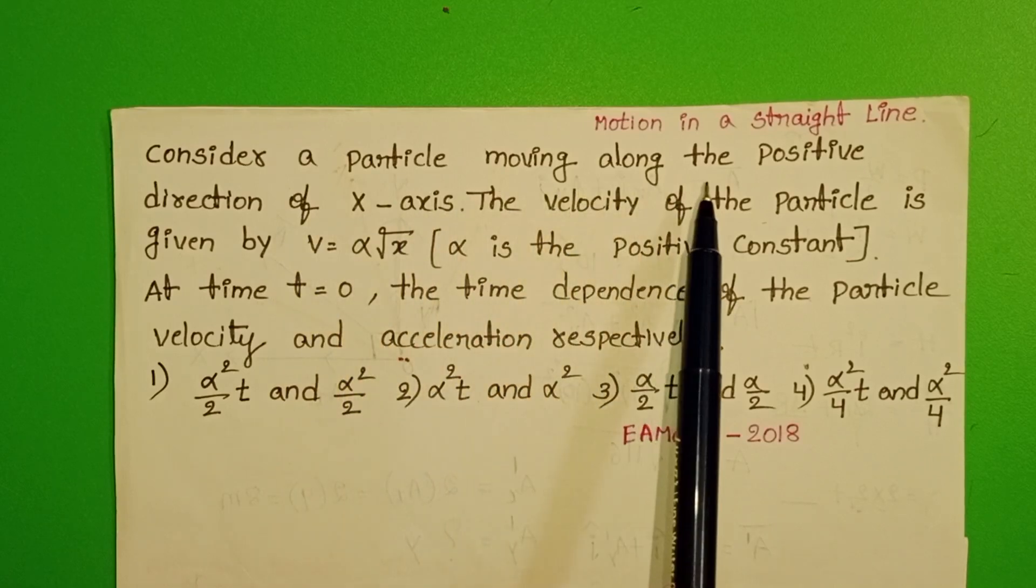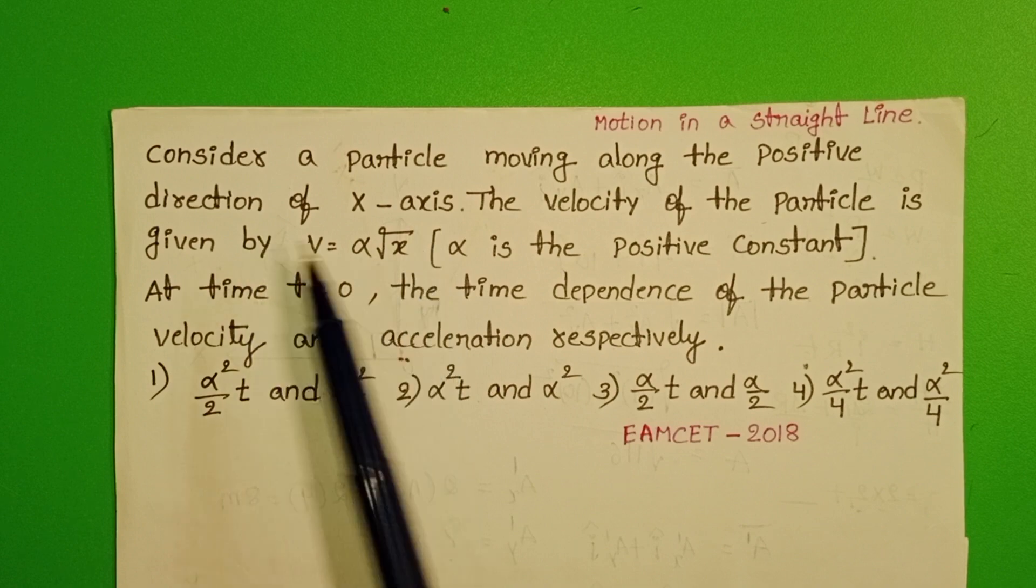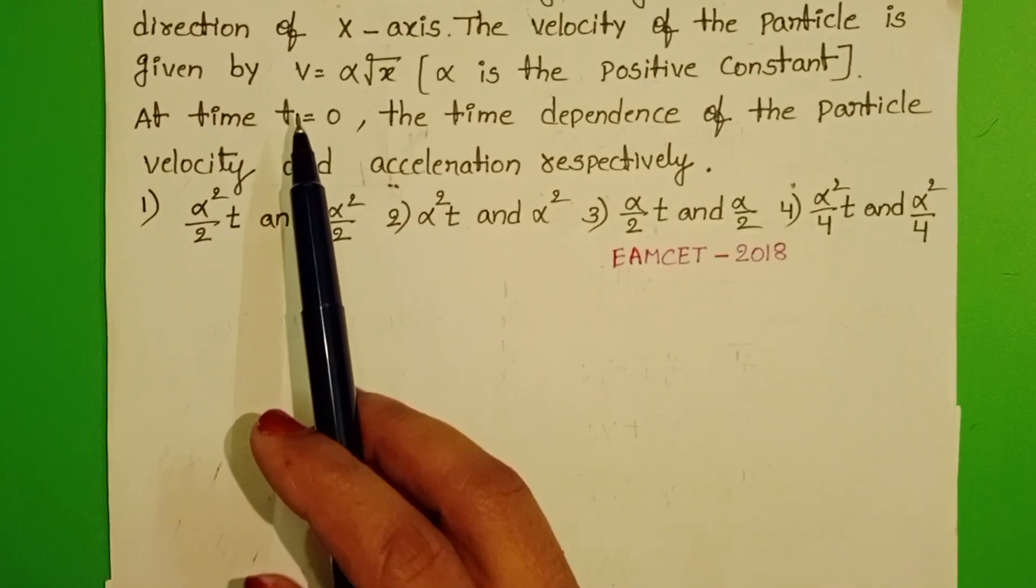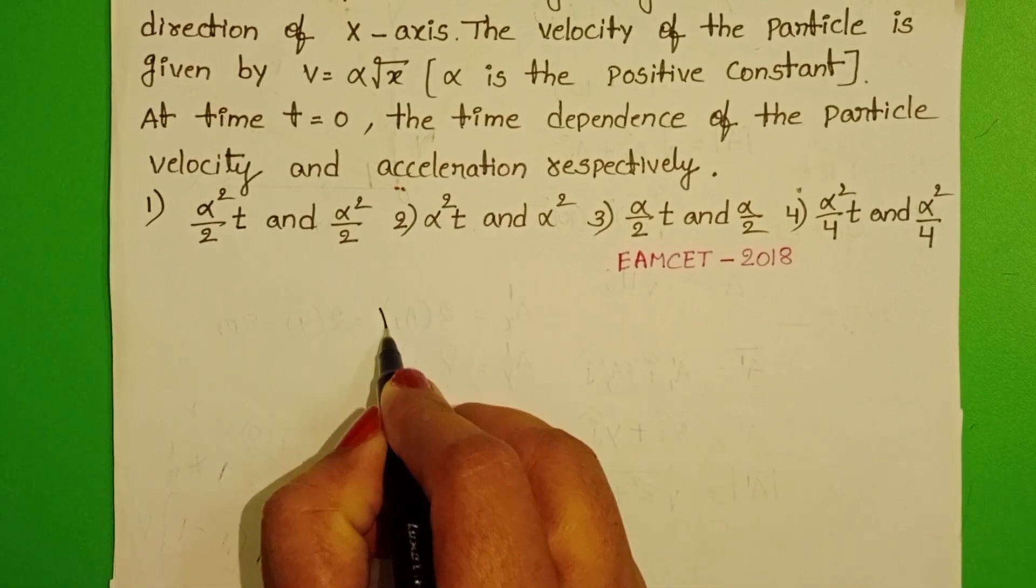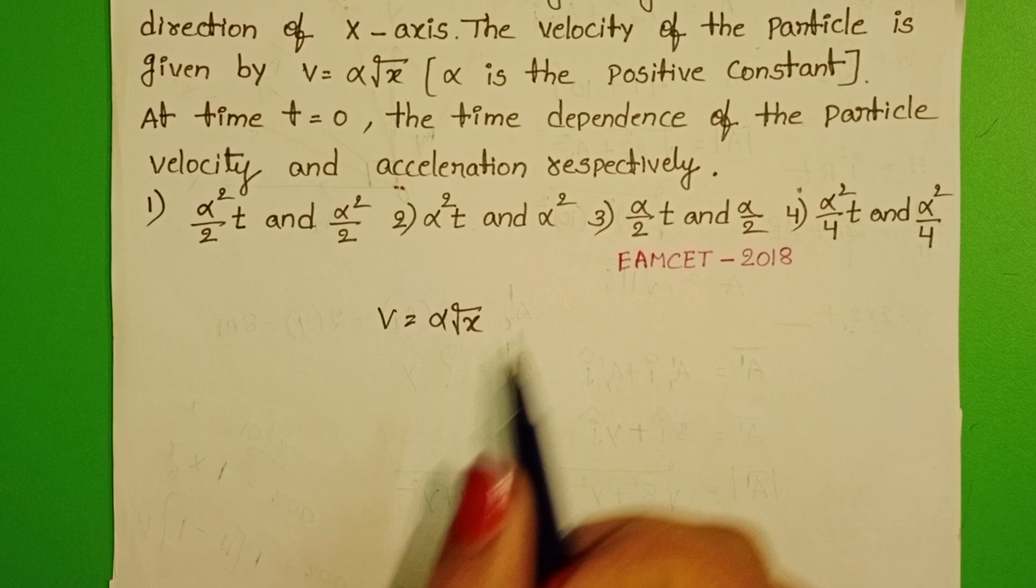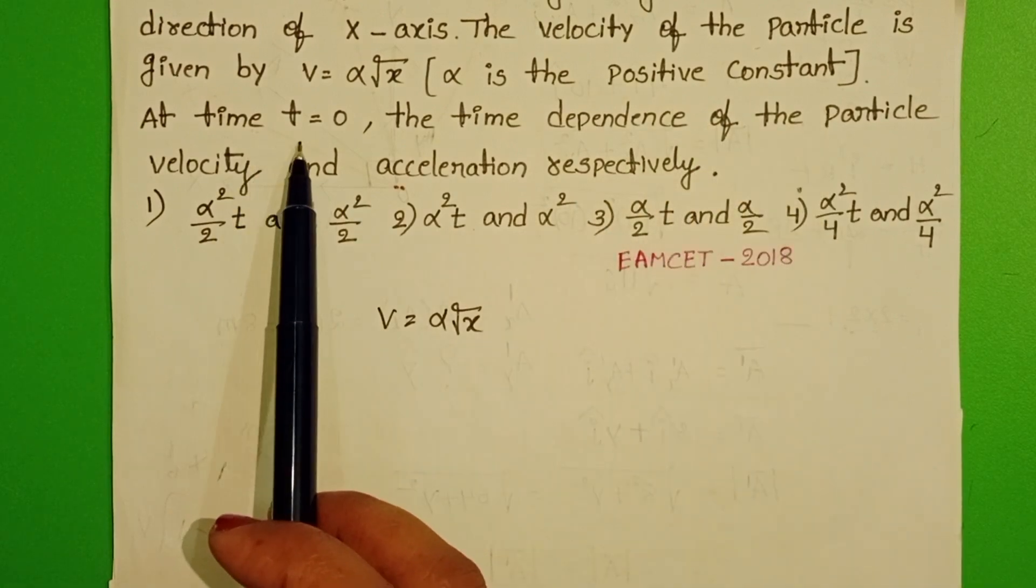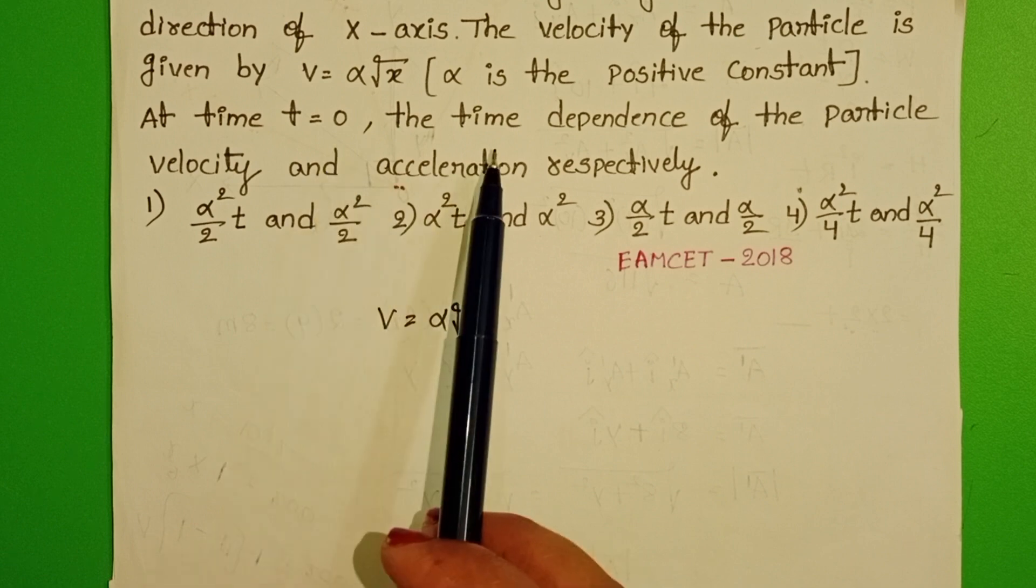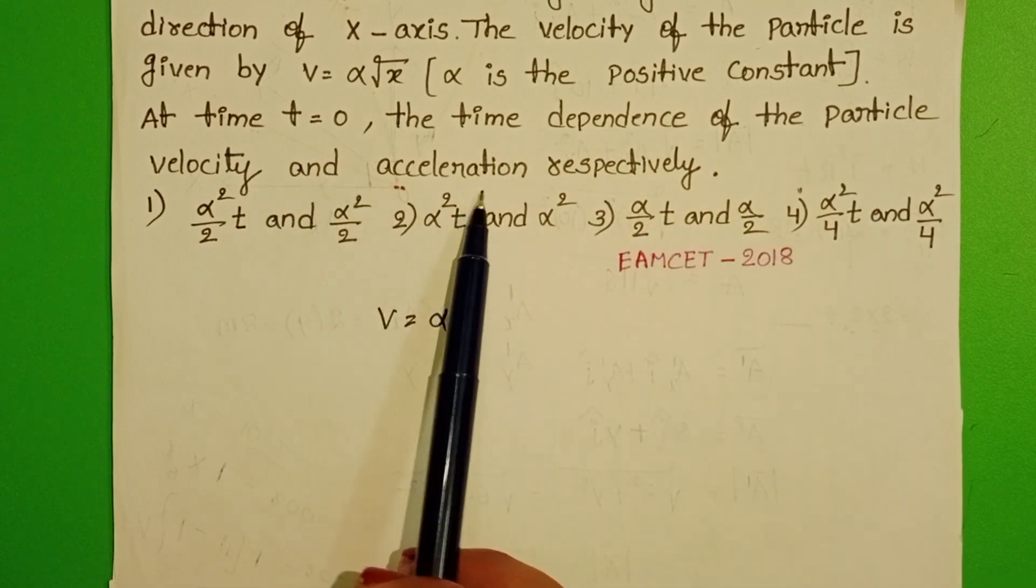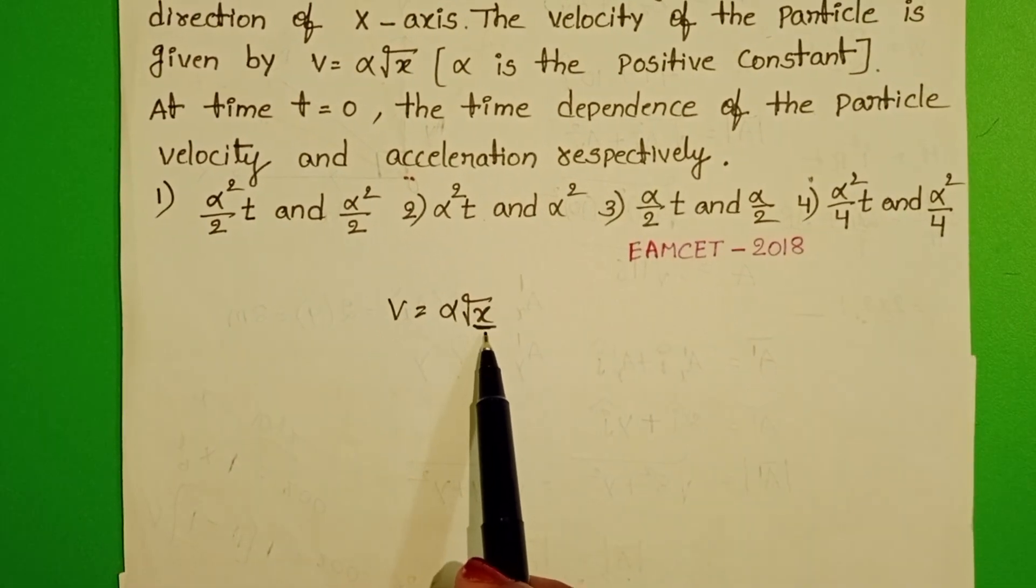Consider a particle moving along the positive direction of x-axis. The velocity of the particle is given by v equals alpha root of x, where alpha is a positive constant. At time t equals 0, the time dependence of the particle velocity and acceleration respectively. The velocity is a function of x.